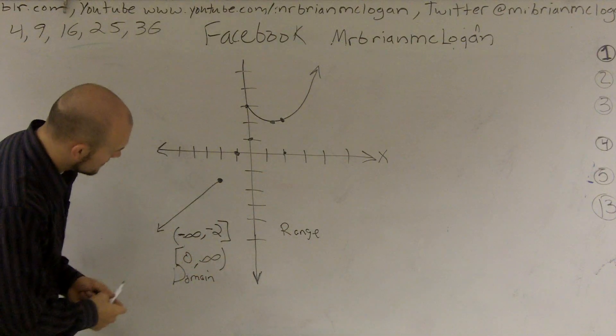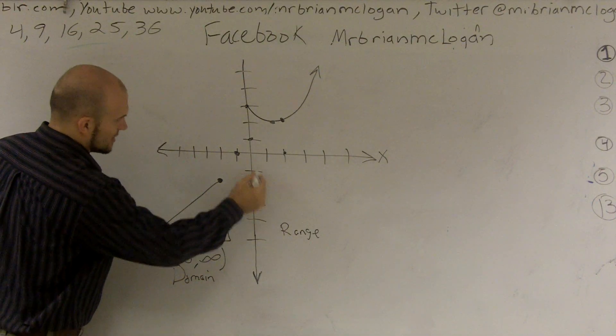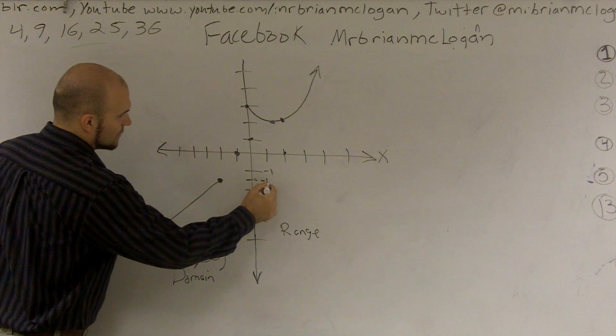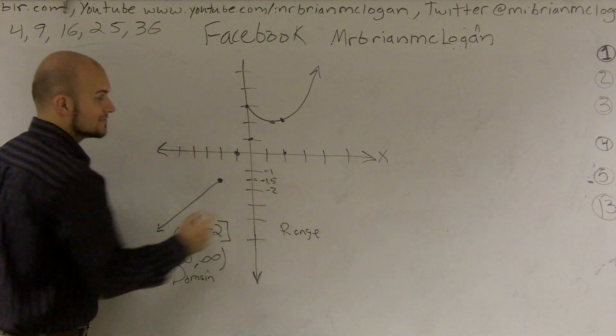Now let's set up here. Let's make a little half mark, right? Let's say that's negative 1. That's negative 1.5. Okay. Negative 2.